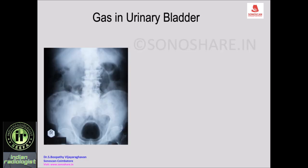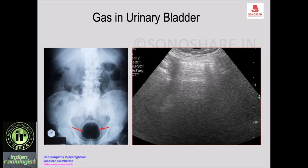This is a plain X-ray of the abdomen showing the KUB area, and there is gas within the urinary bladder. The gas outlines the urinary bladder — normally it will be opaque, but here it is filled with gas. When you do ultrasound in this patient, the gas will produce an echogenic line with reverberation artifact producing a dirty shadow due to gas.